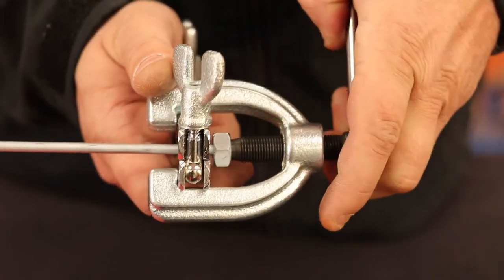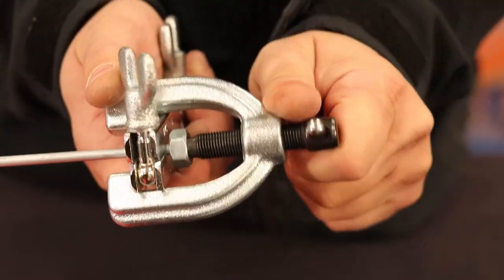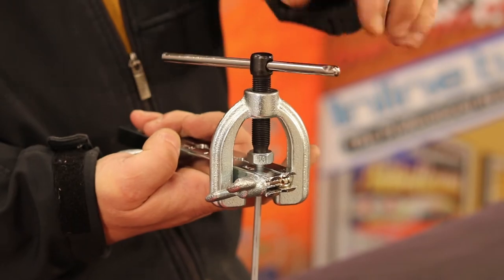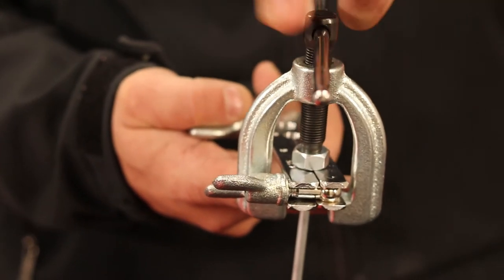You should begin to feel the tubing form as you keep tightening the handle. Once the adapter hits the bottom of the die block, you can begin to rotate the handle counterclockwise.